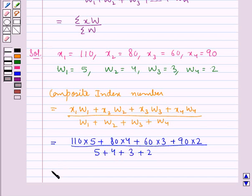So this is equal to 550 plus 320 plus 180 plus 180 and this whole upon 14.